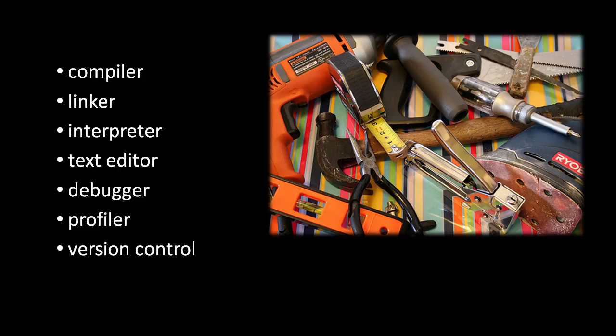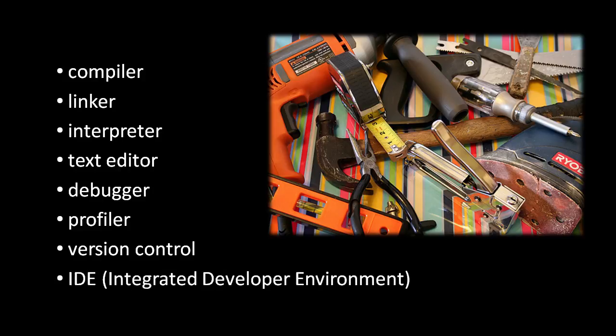A version control system helps programmers manage their files of code as they create and modify them over time. The basic idea is that the programmer can store a snapshot of the current state of their code in what's called a repository, such that at any future point the programmer can later retrieve this version of their code. These version control systems also greatly help teams of developers coordinate their changes to code. Lastly, an IDE, an integrated developer environment, is basically a program which combines all or some of this functionality into one program. While some programmers swear by their favorite IDE, others insist on keeping their tools separate.